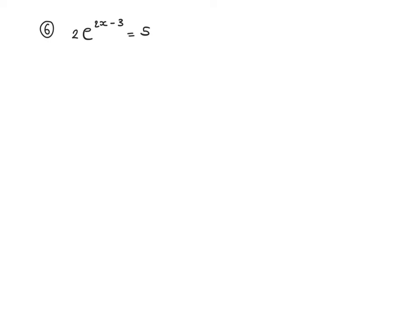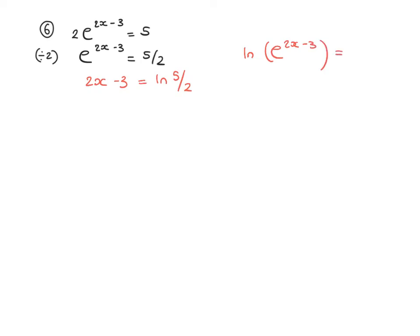Question 6: divide by 2 first, giving e to the 2x subtract 3 equals 5 over 2. Take ln of both sides: the left side gives 2x minus 3, equal to ln of 5 over 2. Rearranging: 2x equals ln of 5 over 2 plus 3, so x equals one half of ln of 5 over 2 plus 3, in exact form.